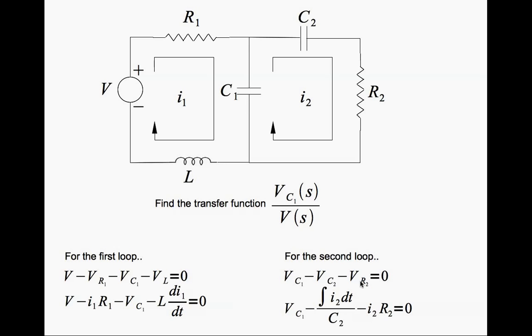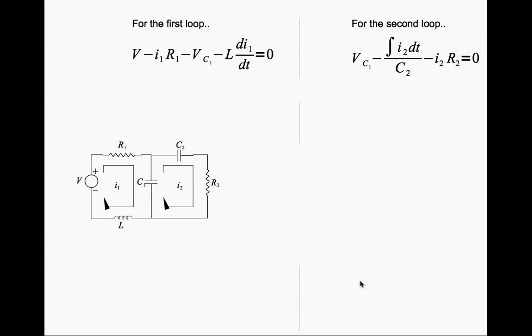I'll substitute for VC2 and VR2 in terms of the current in the loop like so. Now we have the last two equations, the first loop on the left side, the second loop on the right side.